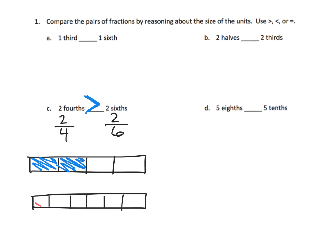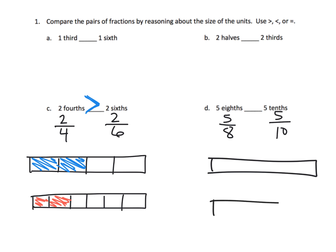So would you rather have two large pieces or two small pieces? That's the logic students use when comparing fractions that have the same numerator — in this case two-fourths or two-sixths. You reason the comparison based on the size of the denominators, the size of the individual pieces. Similarly, with five-eighths versus five-tenths, the eighths are larger than the tenths, so five-eighths is larger than five-tenths.